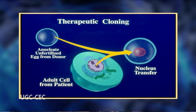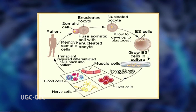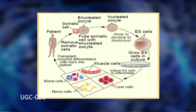In this approach, the nucleus of the unfertilized egg is replaced by the nucleus of a cell from the patient to be treated, causing the egg to have the same chromosome composition as the patient. The egg is then allowed to develop to an early embryonic stage, and the embryonic stem cells are removed, cultured, and induced to differentiate into the type of cells needed by the patient.